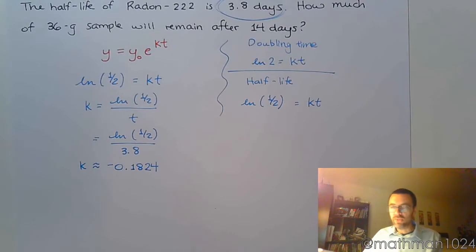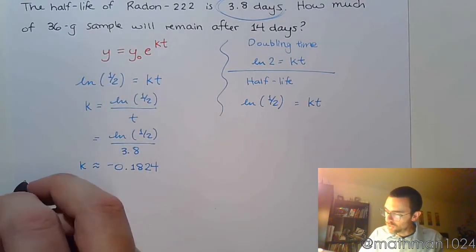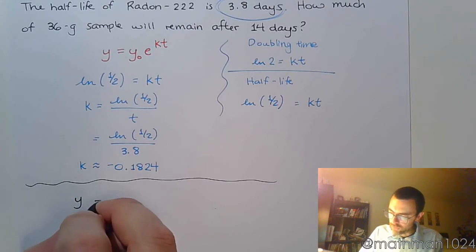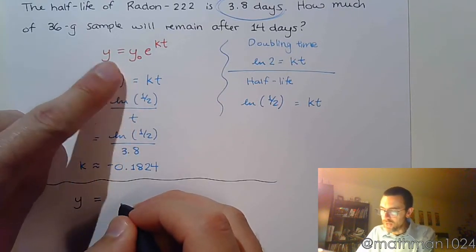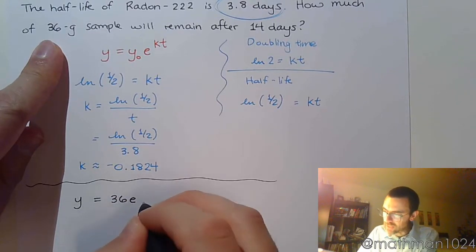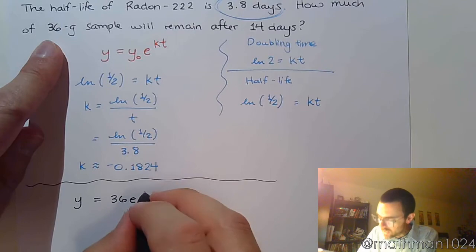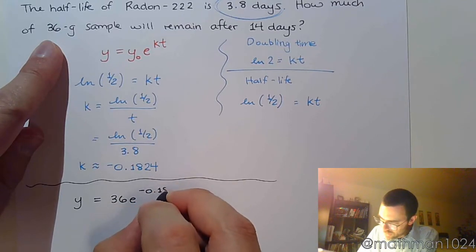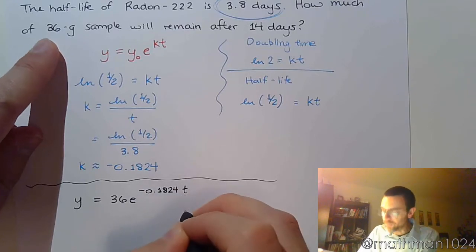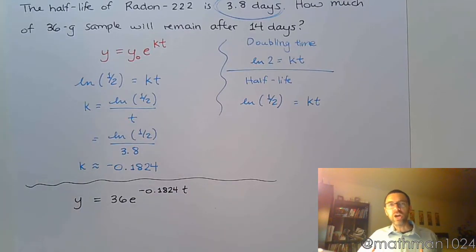And here's what that means. That means we have our k value. We know that we start with a 36 gram sample. So for this problem, your final value is going to be your initial value, which is 36, times e to the kt. Well, my k is negative 0.1824 and then times t. So this now is a formula for anything else we might have about this particular problem where you're starting with a 36 gram sample of radon-222.